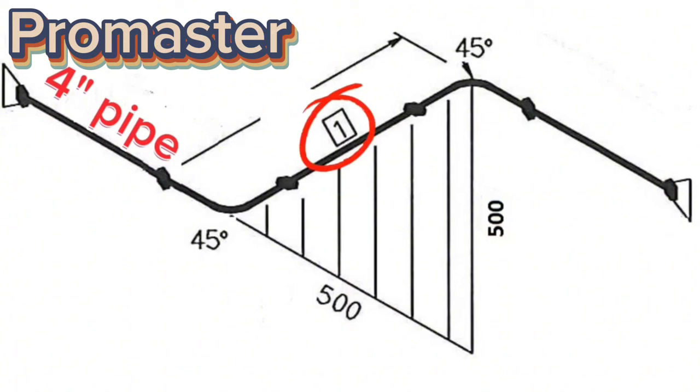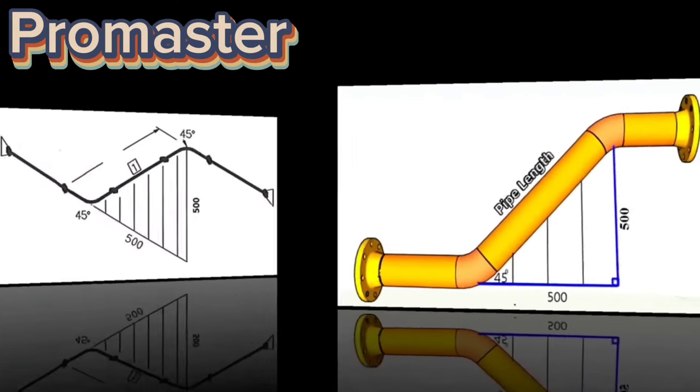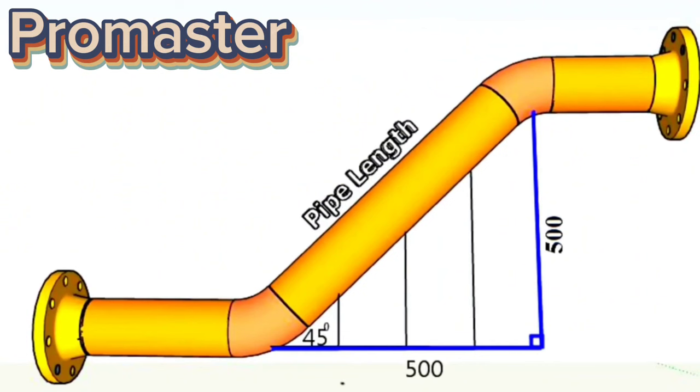For this, we must first find the distance from the center of the elbow to the center of the elbow. We will use a 3D model view of the pipeline to better understand these calculations. We need to calculate the length of this piece of pipe.